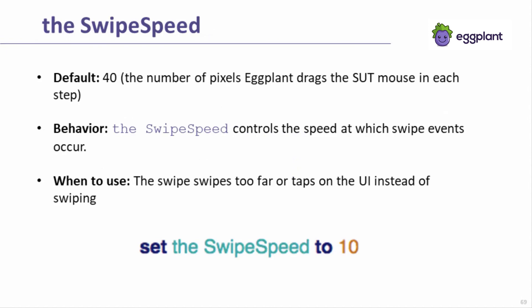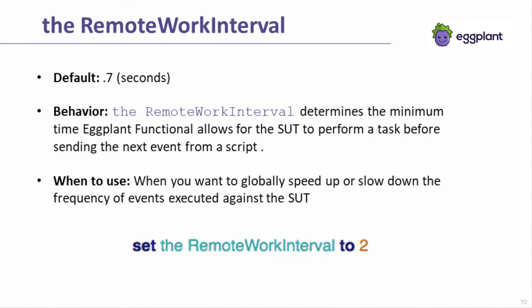The swipe speed controls how far a single swipe command swipes on a mobile device. Lower the swipe speed if a swipe is scrolling too far on the device or if the swipe is accidentally tapping on the screen instead of swiping. The last run option global property is the remote work interval. This run option controls the minimum wait time between each event performed against the SUT. So, for example, if a script has a type text immediately following a click, the type text and click can happen no closer together than the value of the remote work interval. The default remote work interval of .7 seconds is quite conservative, so many users will decrease the value to speed up the overall execution of their scripts. In other situations, such as with a very slow to respond application, increasing the remote work interval might be required.